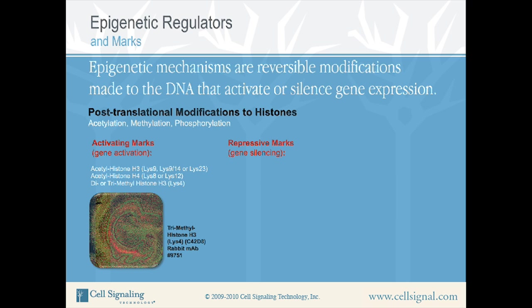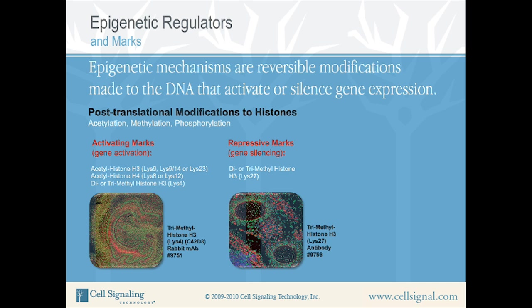Repressive marks cause chromatin to assume a more closed conformation and do not allow transcriptional activation to occur. An example of a repressive mark is di- or trimethyl-histone H3 lysine 27. IF analysis shows expression of the repressive mark trimethyl-histone H3 lysine 27 in tissue surrounding the cartilage primordium of ribs 2 and 3 in an embryonic day 14.5 mouse embryo. Trimethyl-histone H3 lysine 27 antibody has been labeled green. Actin filaments have been labeled red with DY554 phalloidin. Repressive marks will be found in the mouse embryo on lineage-specific genes that are currently inactive.